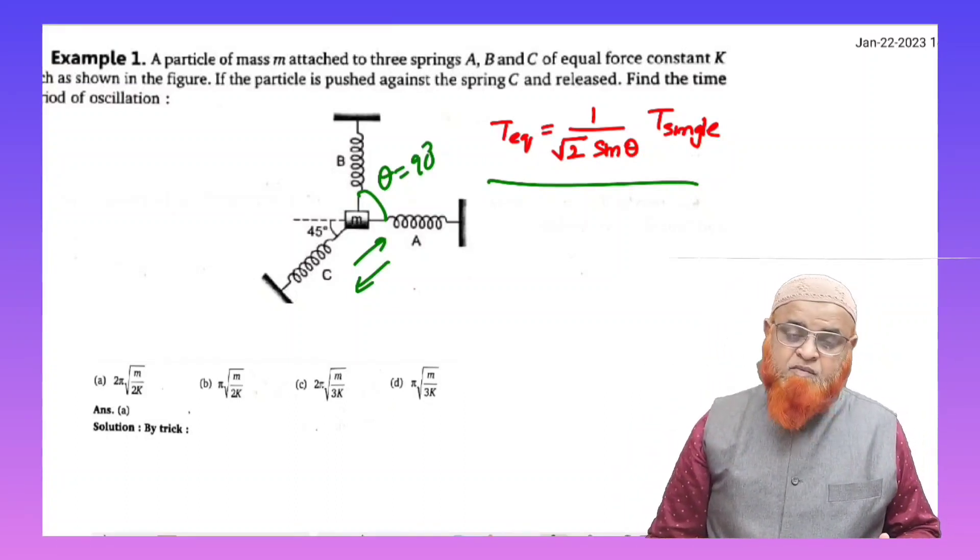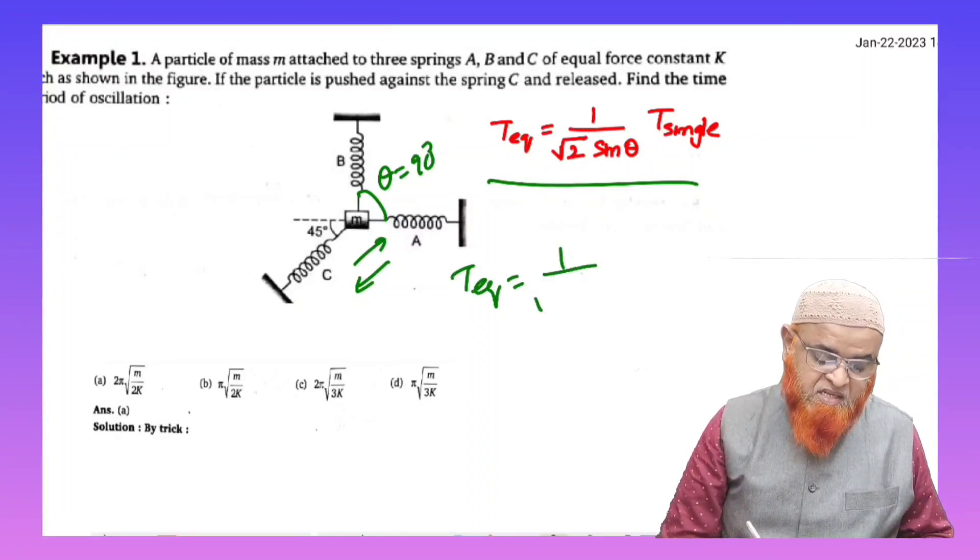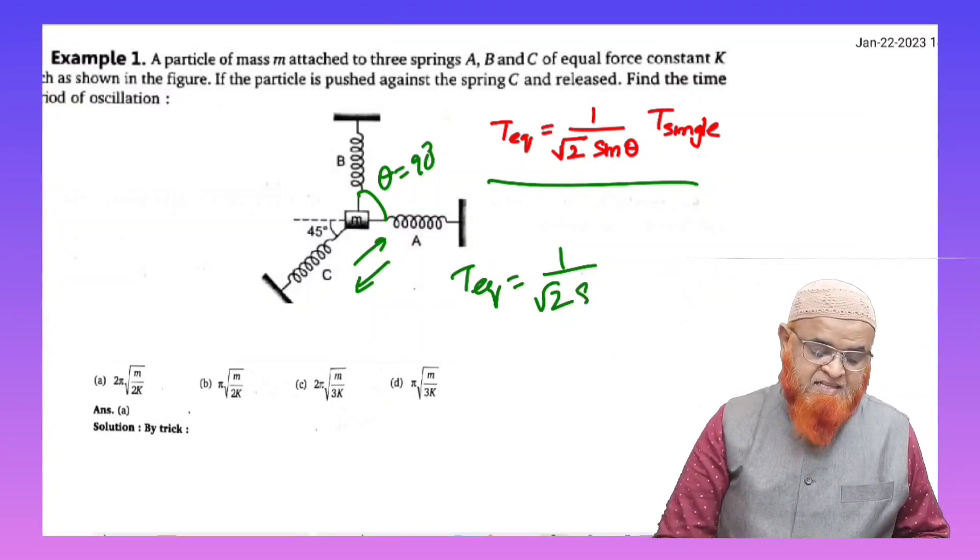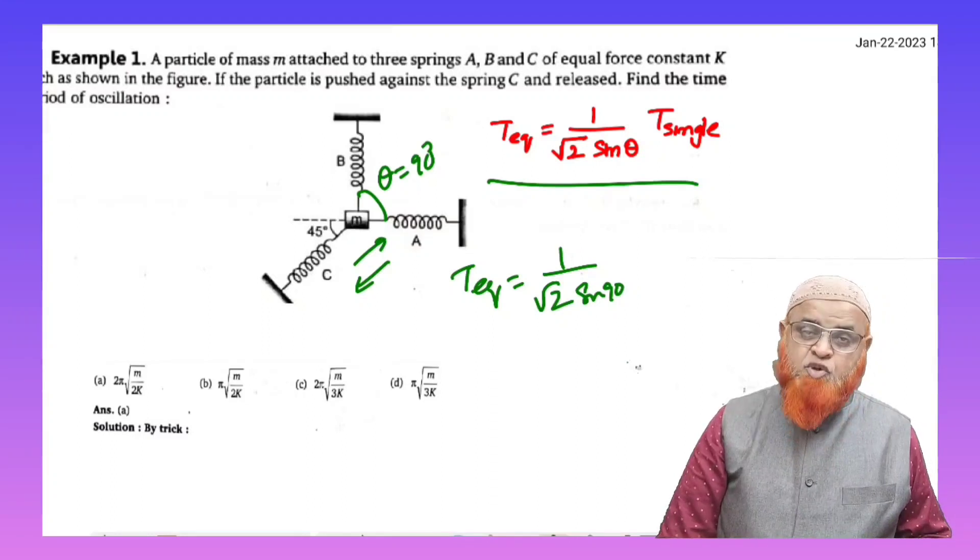So how are you going to find out the T equivalent of this spring? It's very simple. T equivalent is nothing but 1 by root 2, this is a shortcut, and sine theta is sine 90, and sine 90 is going to be 1.